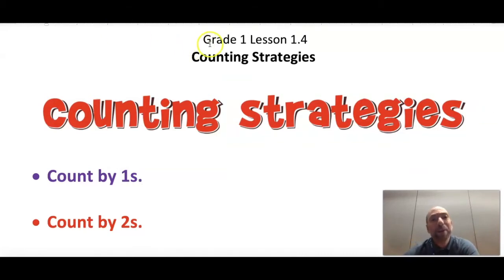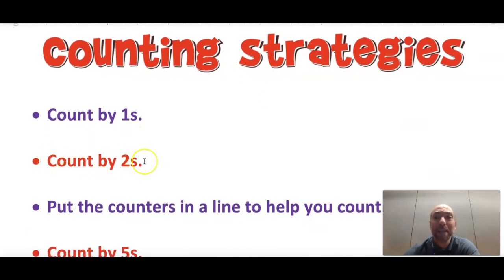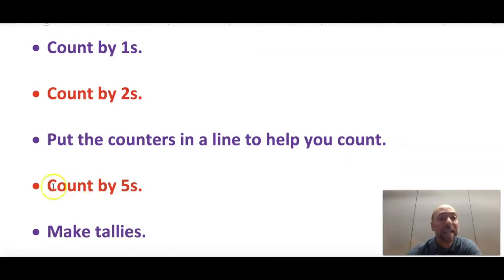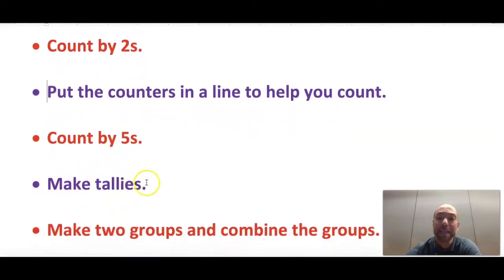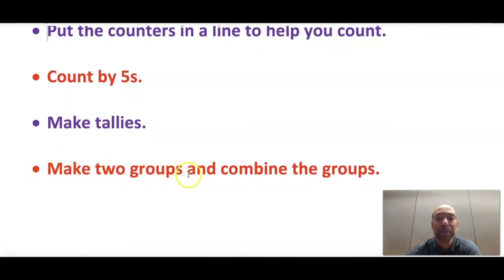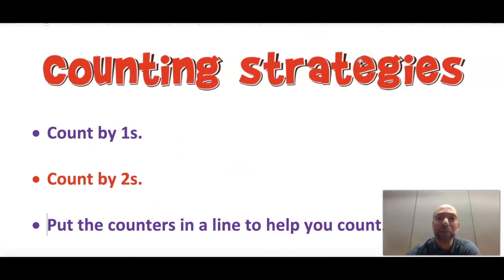So today in math we are going to be doing grade one lesson 1.4: counting strategies. Our counting strategies are: sometimes we can count by ones, sometimes we can count by twos, sometimes we can put the counters in a line to help us count, sometimes we can count by fives, sometimes we can make tallies to help keep track of how many we have, and sometimes we can make two groups and combine them.